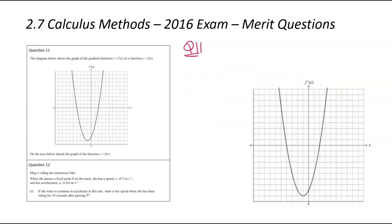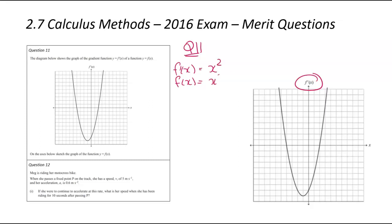Now looking at question number 11, which asks us to draw a graph. I've replicated the axes a bit bigger to help. The key thing to note: we've been given the gradient function f'(x), and we've been asked to draw the original function. The most common mistake is going in the wrong direction. This gradient function is a positive parabola — so x squared — meaning if I were to integrate it, f(x) would be some kind of positive cubic.